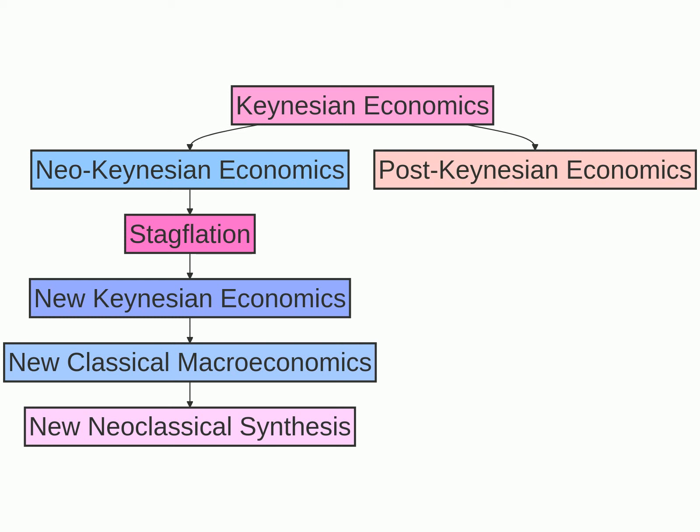Simultaneously, new classical macroeconomics was emerging, which incorporated more free market ideas into economic thought. These two new theories — new Keynesian economics and new classical macroeconomics — led to the creation of the new neoclassical synthesis, which is an amalgamation of both theories that is heavily relied upon today by economists.